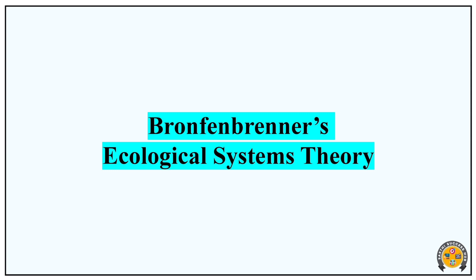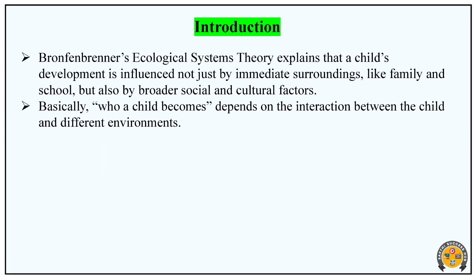This is a simple theory. Now let's talk about the theory. Bronfenbrenner's Ecological Systems Theory explains that child development is influenced not just by immediate surroundings like family and school, but also by broader social and cultural factors.